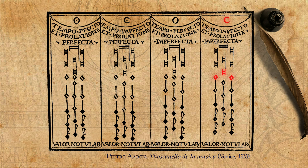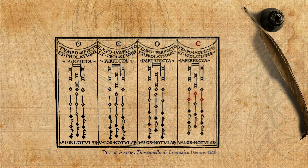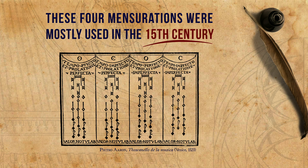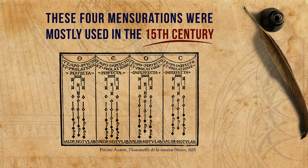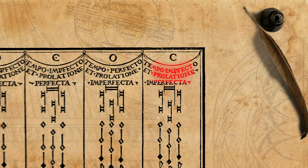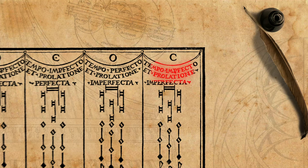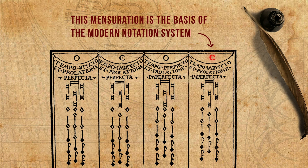It should be said that these four mensurations were mostly used in the 15th century. By the 16th century, although still mentioned in almost all treatises, they were seldom used in actual music. Notice, however, the last mensuration and its C sign, where everything is imperfect — out of the four, it was the only one used throughout the 16th century. In fact, this mensuration is the basis of the modern notation system as we know it. It is not by chance that it was later termed common time.